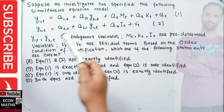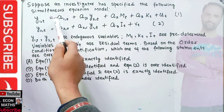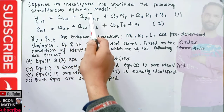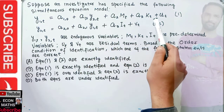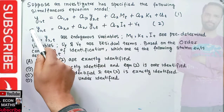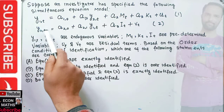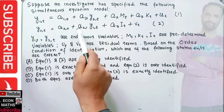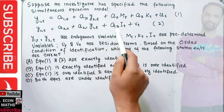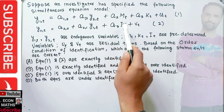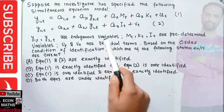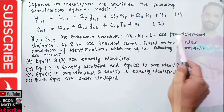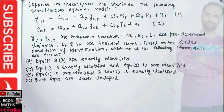The question presents a simultaneous equation model. The first equation is: y1t = α10 + α12·y2t + a2·mt + a3·kt + ut. The second equation is: y2t = α20 + α21·y1t + α3·it + vt. Here y1t and y2t are the endogenous variables, and mt, kt, and it are the predetermined (exogenous) variables. ut and vt are the residual terms.